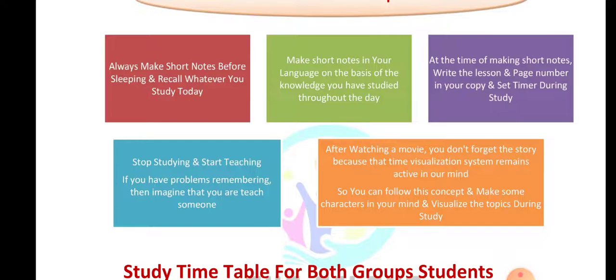If you are resuming study after many days and want to jump straight to 10 hours, that is not possible. Start from 6 hours — study 6 hours today, increase by 30 minutes tomorrow, then 30 minutes more the day after. Once you reach 10 to 12 hours, continue at that level. The idea is to increase your efficiency every day gradually.